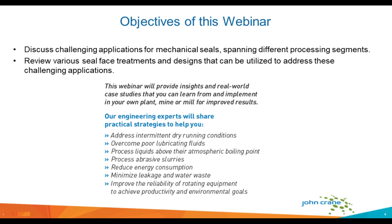During industrial processing operations, every mechanical seal application experiences its own unique set of challenges, including inadequate seal face lubrication, high heat generation, and dry running conditions. These issues can cause leakage, unplanned equipment downtime, and even catastrophic equipment failure, negatively impacting operations and profitability. Mean times between repair intervals for mechanical shaft seals can occur frequently in these harsh conditions, which means maintenance costs go up and equipment run time goes down. Stay tuned to gain insights based on expert knowledge and real-world case studies that will be of use in your plant, mine, or mill.